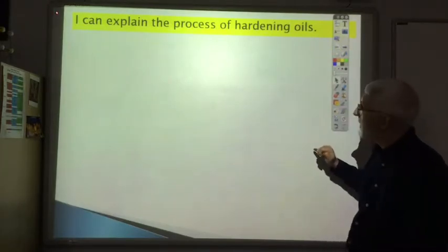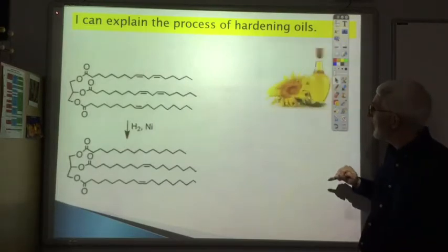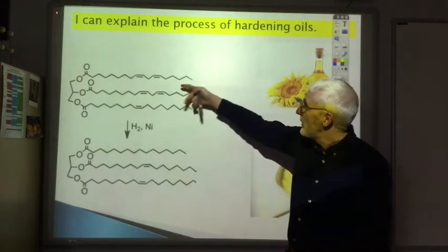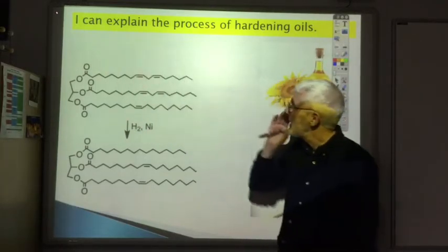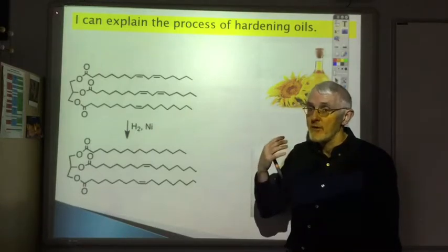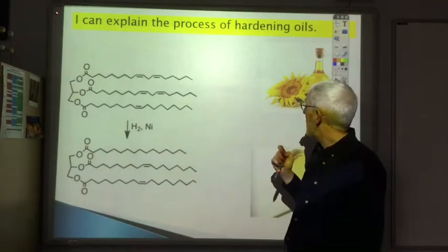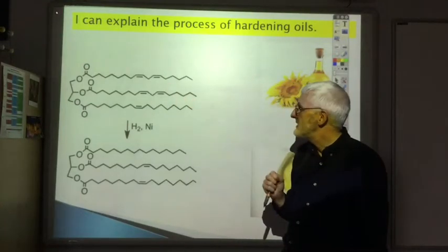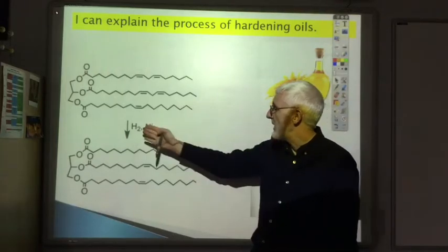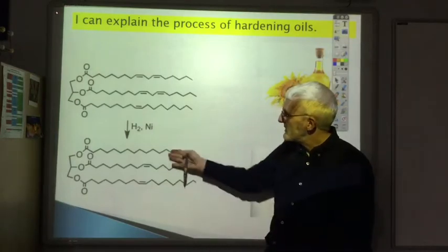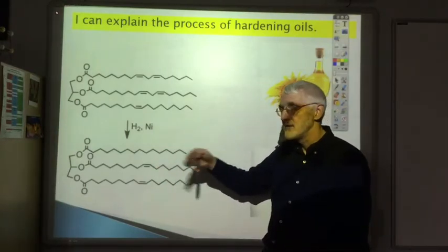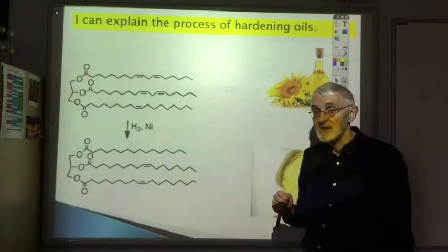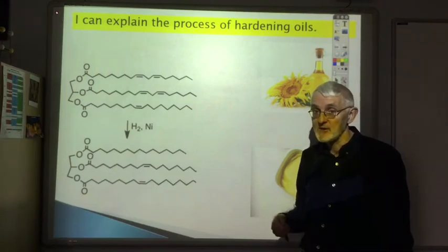Finally, you should be able to explain the process of hardening oils. This is how we turn oils like sunflower oil into margarine. Here's our sunflower oil - lots of carbon-carbon double bonds in the fatty acid chain, hence doesn't pack together closely, so we've got not very effective intermolecular forces, so it's an oil at room temperature. When we harden the oil, we partially remove the double bonds, so we partially remove the unsaturation. We do that by adding hydrogen using a nickel catalyst. You see in the product there's less carbon-carbon double bonds, so the melting point is going to increase such that it's just about solid at room temperature. That's the summary of all the learning outcomes for the fats and oils section of 2.1.